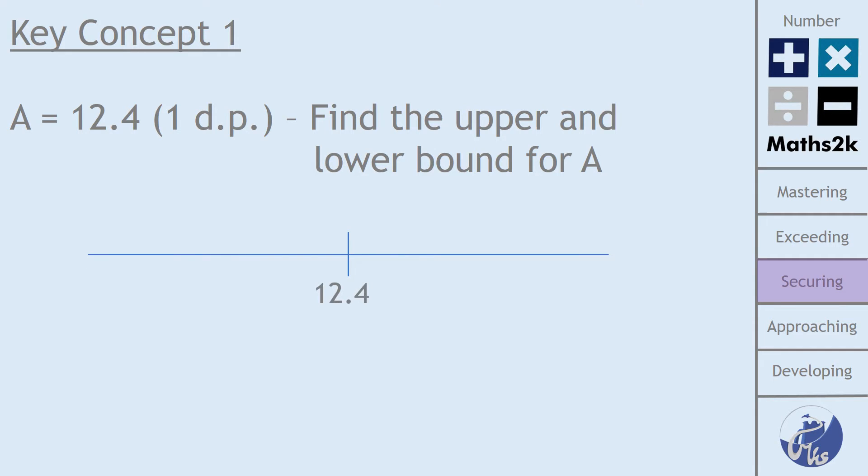So when we have 12.4 and it's been rounded to one decimal place, what it means is that there's some values which are a bit bigger or smaller that would round to 12.4. They'll either round down or they're going to round up. And what that means is that there's other values either side of 12.4 that our values haven't rounded to. They didn't go to 12.3 and they didn't go up to 12.5. So there are these boundaries, there are these points in between where we would choose to round up or down. And that's what we mean by an upper or lower bound.